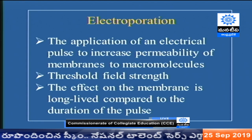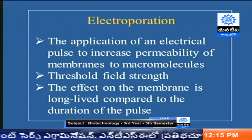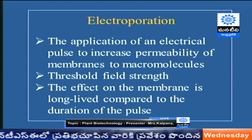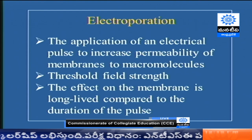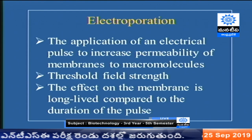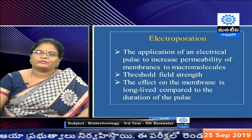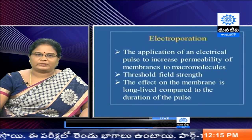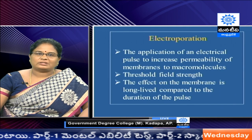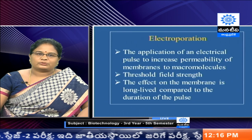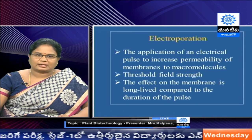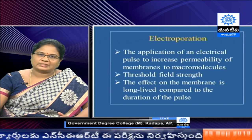We have to make the membrane permeable to macromolecules also. We first need to fix the threshold field strength, because if we apply too high a voltage, the protoplast membrane may break down and the cell will die. We have to check at what voltage, temperature, and duration the membrane holds good while still allowing the protoplast to survive after pore formation. This threshold field strength varies from plant to plant and from cell to cell.